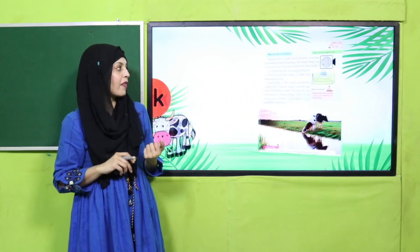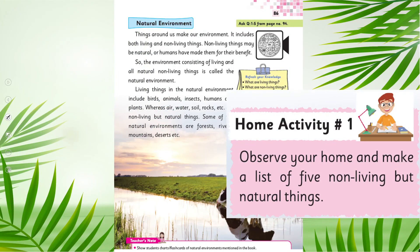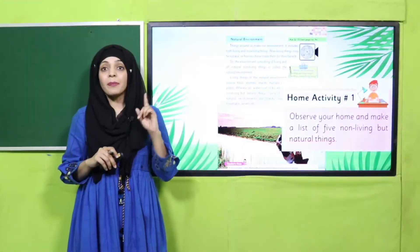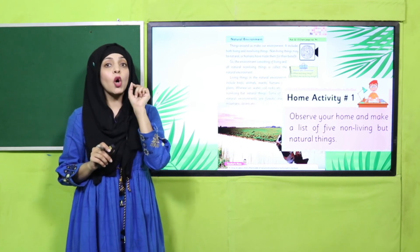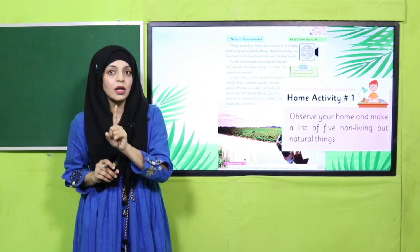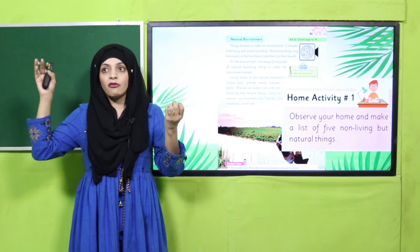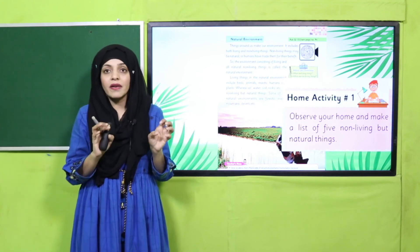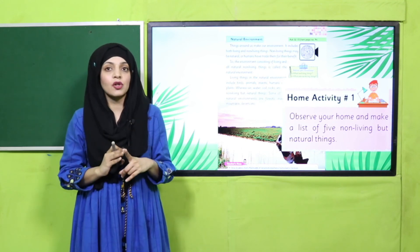Now let's quickly look at the homework given on page number 86 — home activity number one: observe your home and make a list of five non-living but natural things. Note down the names of non-living things in your notebook, but they must be natural, not man-made. Things like a pen, bottle, or walls are non-living but man-made. The things you note down must be non-living and natural.